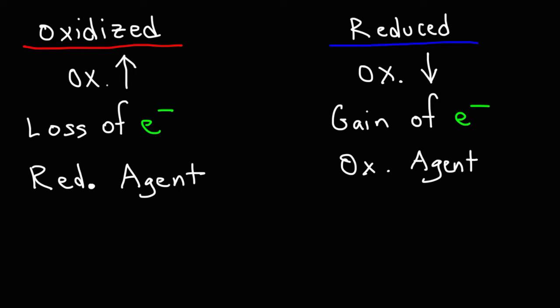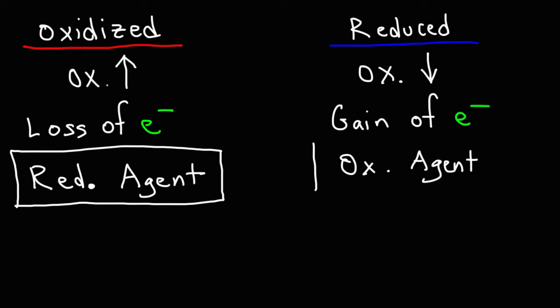In this video, we're going to talk about how to identify the oxidizing agent and the reducing agent in a chemical reaction. What you need to know is that the substance that is oxidized is the reducing agent, and the substance that is reduced is the oxidizing agent. So if we can find out which substance is oxidized and which one is reduced, we can easily find the reducing agent and the oxidizing agent.